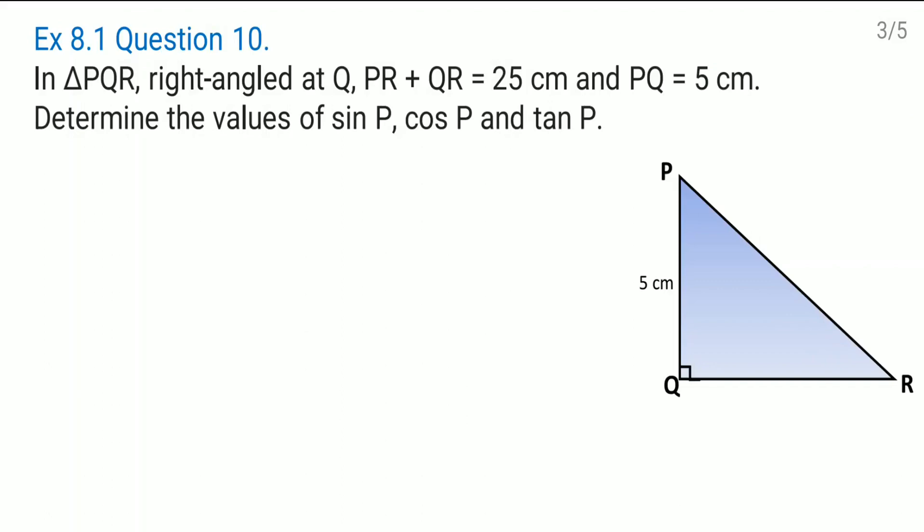In triangle PQR right angle at Q, PR plus QR sum of the two sides they have given us which is equal to 25 cm and PQ which is equal to 5 cm. Determine the values of sin P, cos P and tan P.